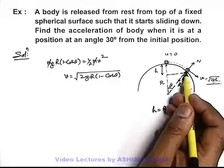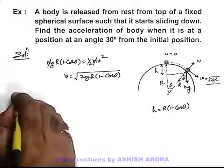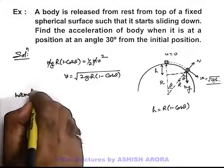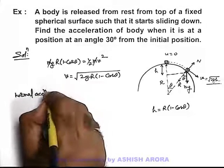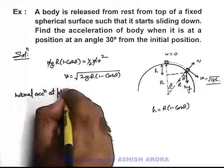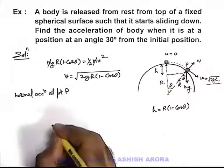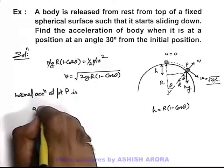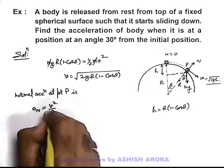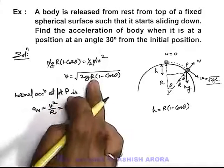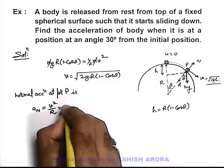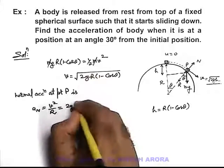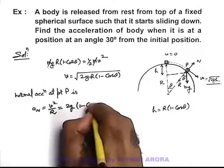If we talk about acceleration at this point, we can simply say normal acceleration at point P, say this point we denote by P, is, we know very well that normal acceleration we write as v^2/r. On substituting the values we get 2gr gets cancelled out, it is (1 - cos 30 degrees).